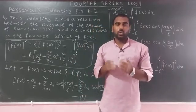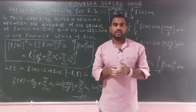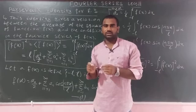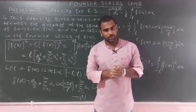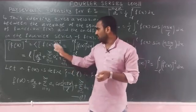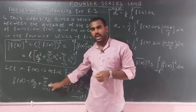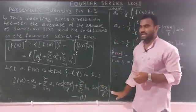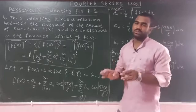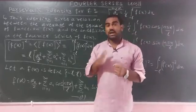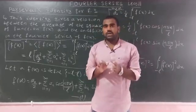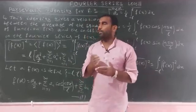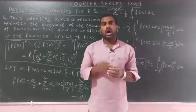We know that if a function f(x) is defined in the interval minus l to l, it can be expressed as a sum of sine and cosine functions — that is, the Fourier series: f(x) = a₀/2 + summation from n=1 to infinity of aₙ cos(nπx/l) + summation from n=1 to infinity of bₙ sin(nπx/l). Parseval's identity gives the relationship between the average of the square of a function and the Fourier coefficients.